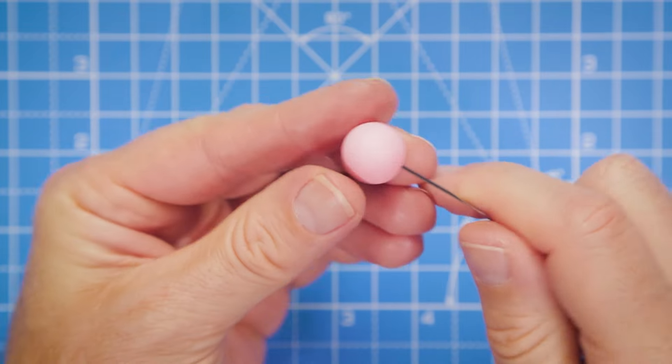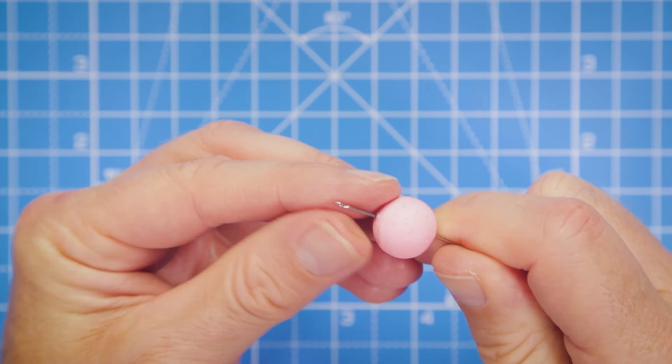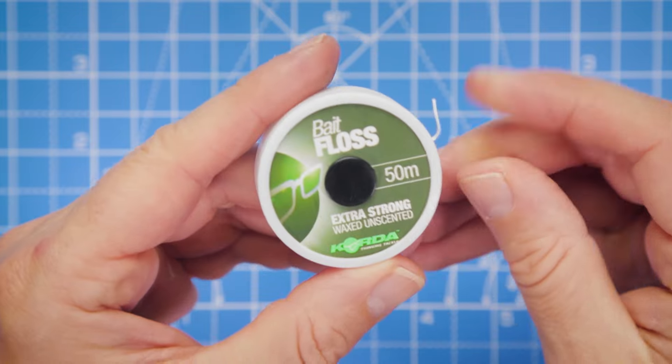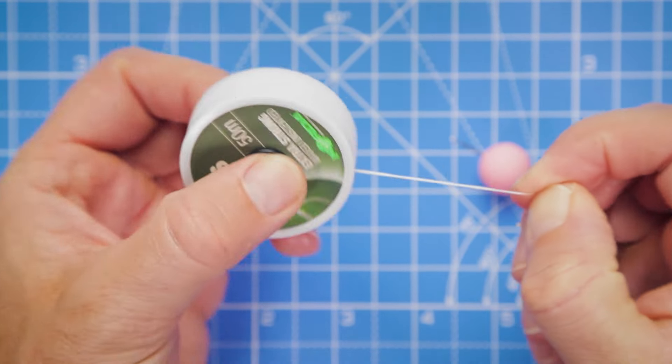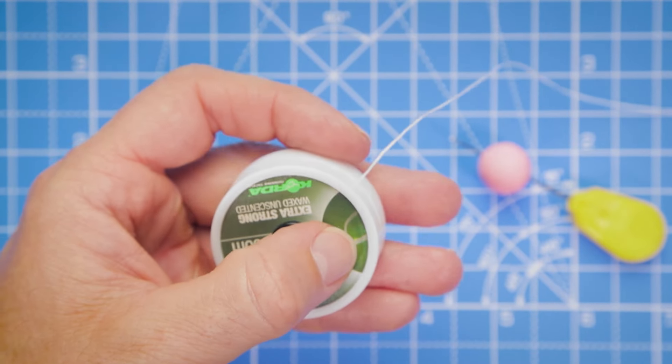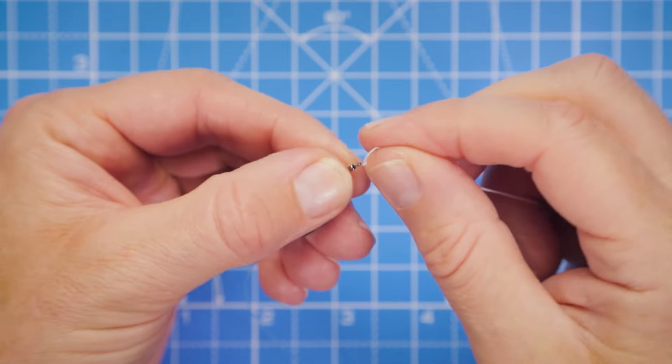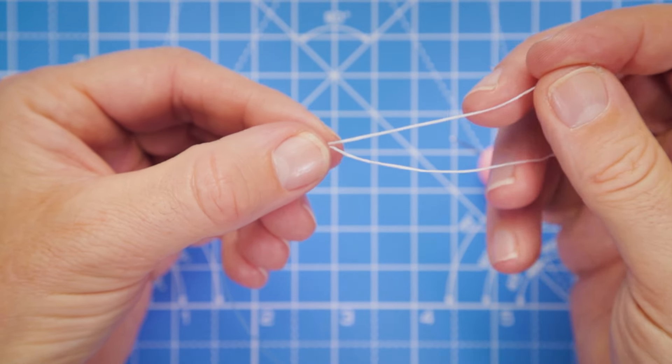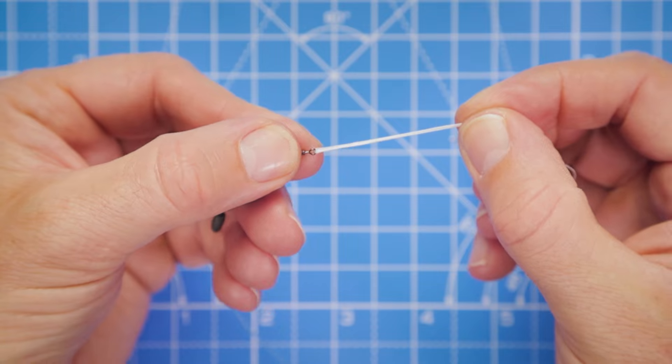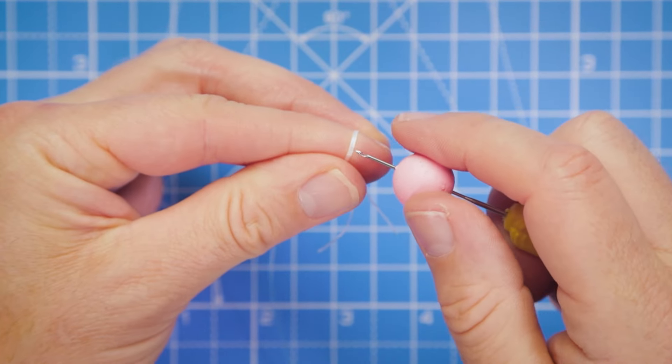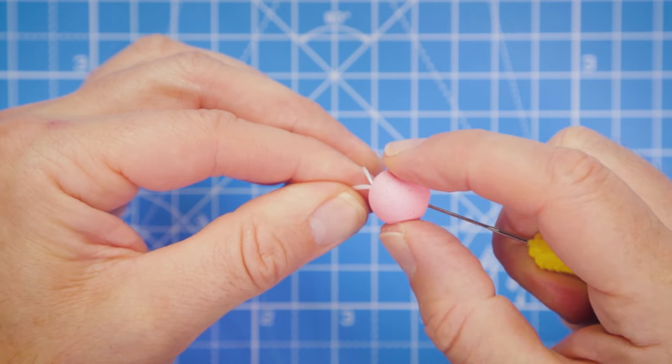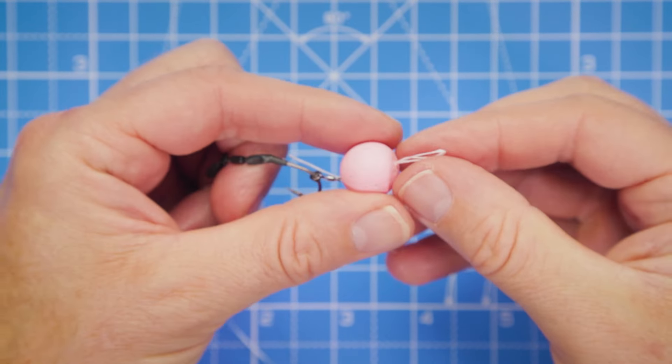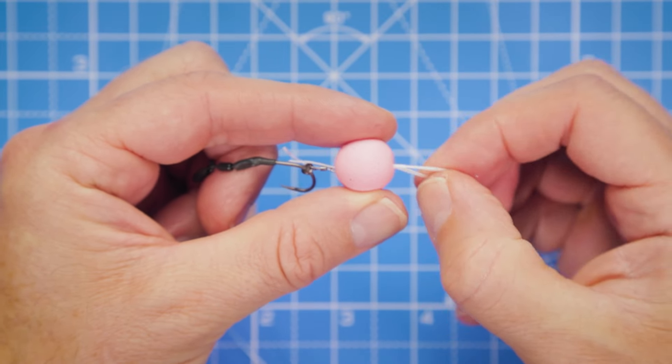Now we're ready to attach our hook bait. As we said earlier, you can use this presentation with both wafters and pop-ups. I'm going to take the baiting needle and thread that straight through the center of the pop-up. This is one of our new Pink Pineapple limited edition pop-ups. Then we're just going to take the bait floss, pull off maybe 10 centimeters or about five inches of the floss, and trim that away with the scissors. Simply take one end of that piece of floss, thread it through the micro ring swivel that's sliding upon the shank of our hook, and pull it through so you've got two tag ends of equal length. I like to just wrap them over my index finger. This makes it really easy to hook the baiting needle onto the floss.